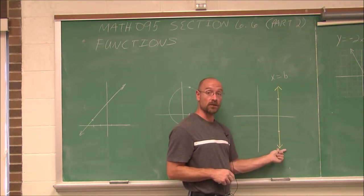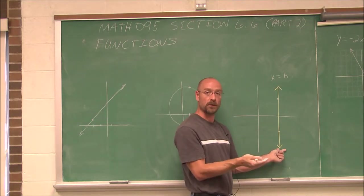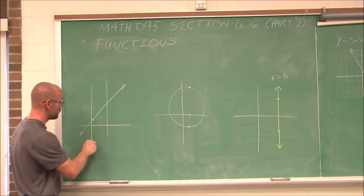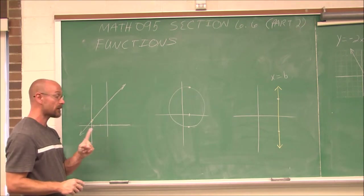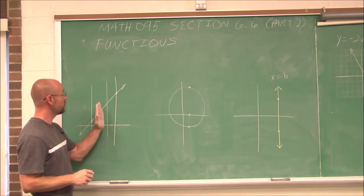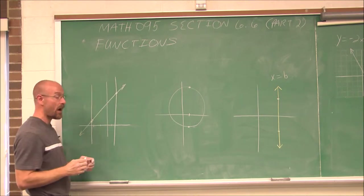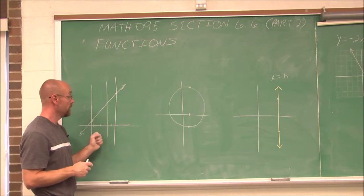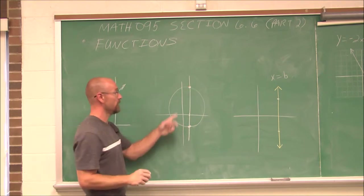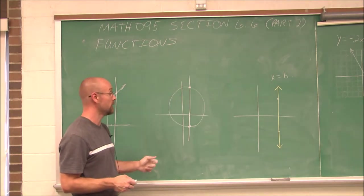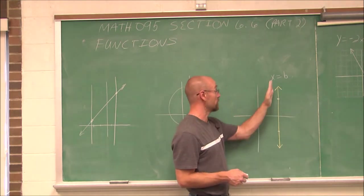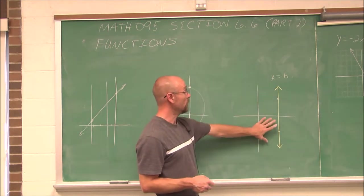For that reason, we can use this as our tool to determine whether we have a function when looking at a graph. If I take a vertical line and draw it anywhere on this graph, it only intersects the graph one time — that tells me x doesn't repeat. If I place a vertical line anywhere and it only intersects once no matter where I place it, it is a function. But over here on the circle, the vertical line intersects in more than one place, telling me immediately it is not a function. And if I lay a vertical line over a vertical line, it intersects an infinite number of places.